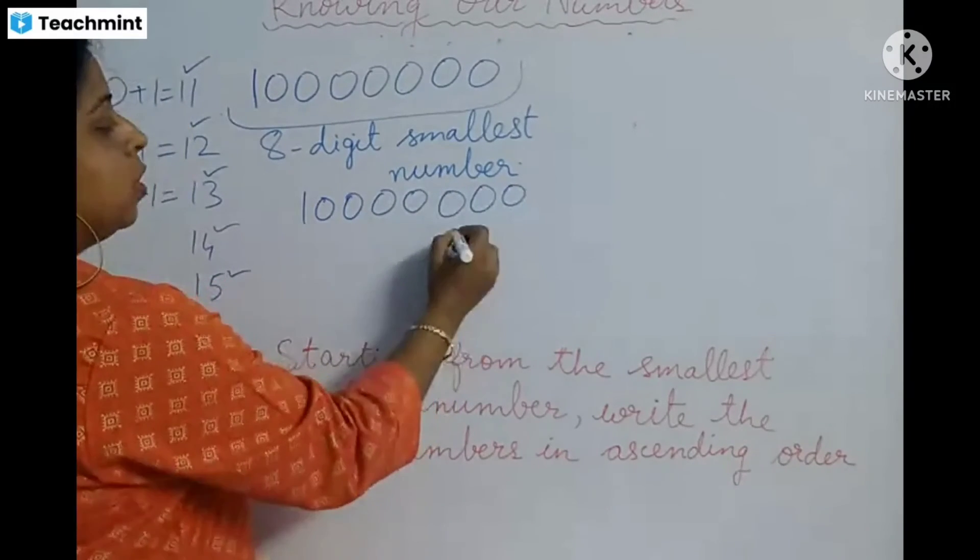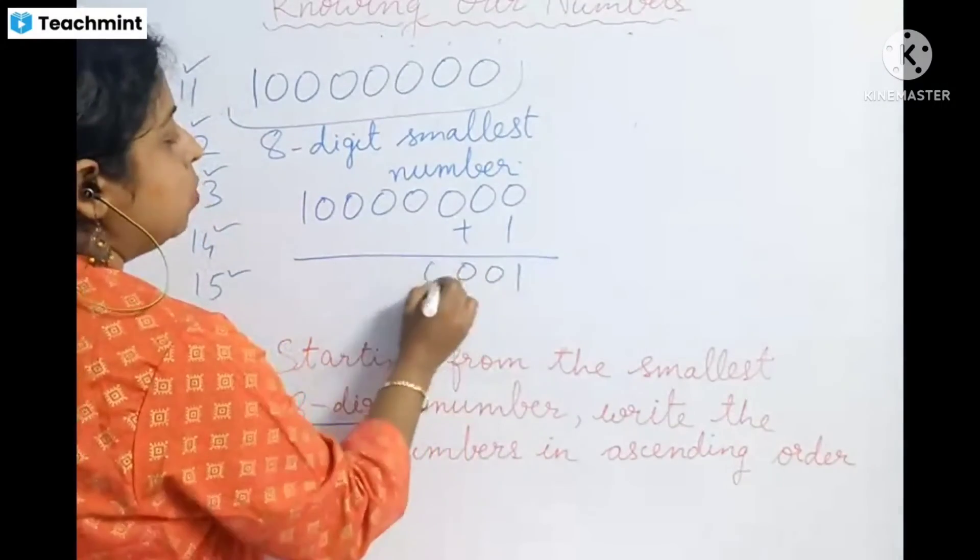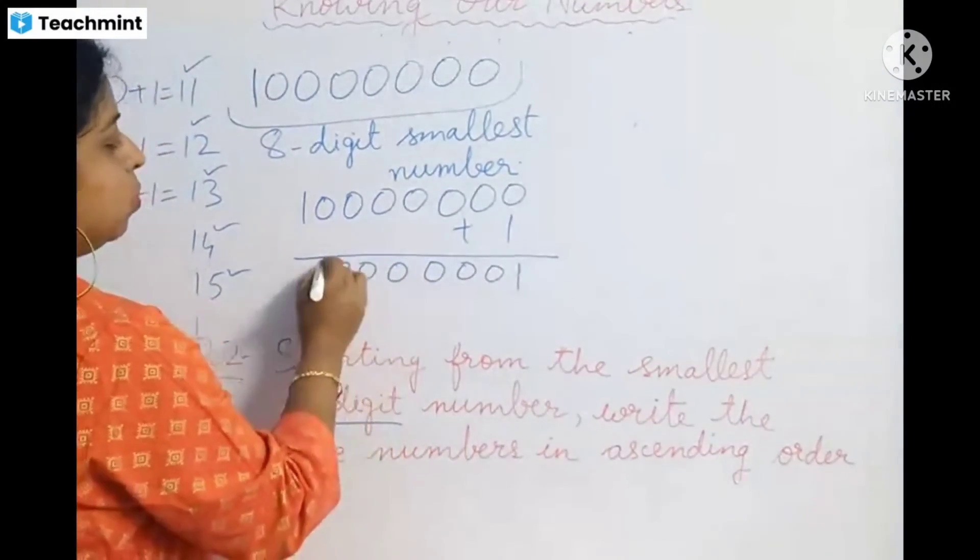Then you will do 3, 4, 5. 1 plus 1, 1, 0, 0, 0, 0, 0, 0, 1.